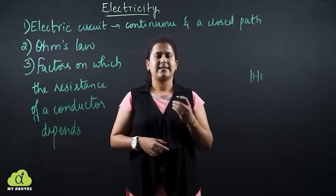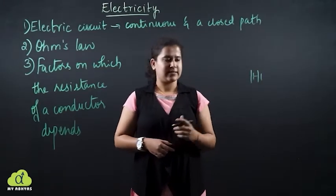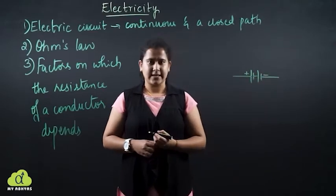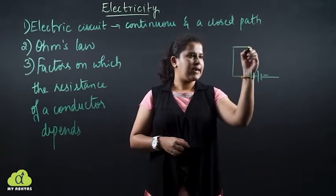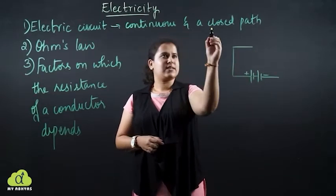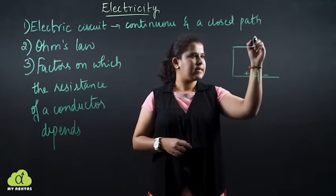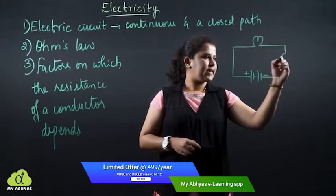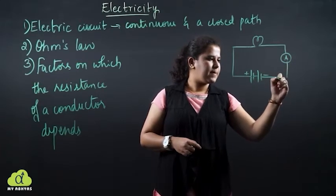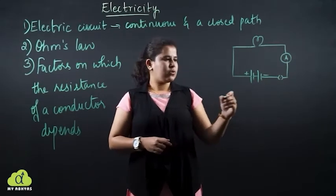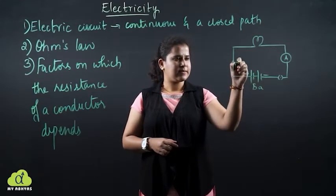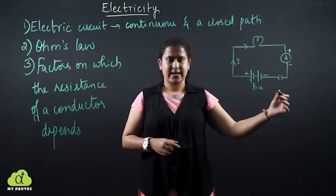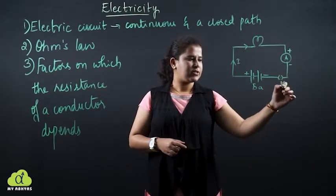A battery or a cell is a source of energy, or source of current. I take the terminals — this will be a positive terminal and this will be a negative terminal. Then I take a loop because it is a continuous and closed path. Next I will take a bulb, then extend this and connect an ammeter, and then one plug key. So the current is passing from the battery, the bulb glows when the current passes, the ammeter has positive and negative ends, and then there is the key denoted by K.